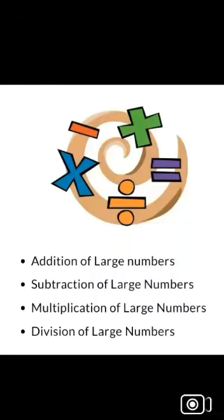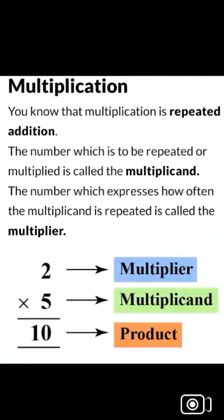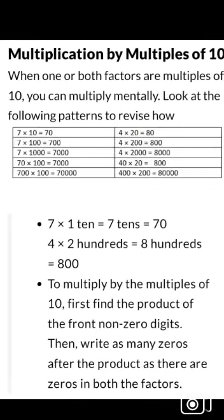Today we are going to start the next topic: operations on large numbers. There are four operations — addition, subtraction, multiplication, and division. We take multiplication first. If we take two numbers, for example two multiplied by five, here two is the multiplier, five is the multiplicand, and the product is ten.